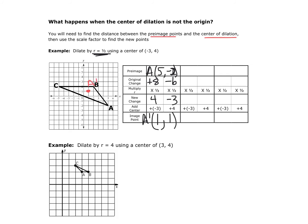Now let's do point B, originally at (2, 2). The distance from the center: 2 minus −3 = 5 in x, and 2 minus 4 = −2 in y. Half of both of those gives 2.5 and −1. Then adding the center coordinates (−3 and 4): −3 + 2.5 = −0.5 and 4 + (−1) = 3. So B prime is at (−1/2, 3).